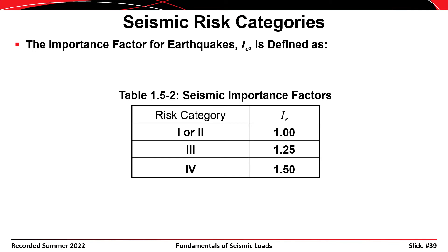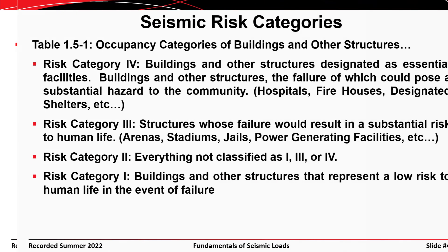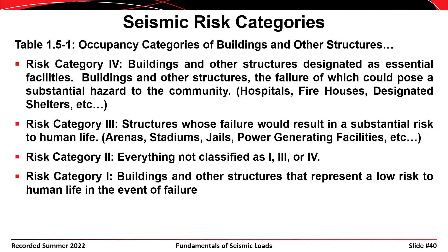The importance factor for earthquakes, I sub E, is something we covered in module one. As a reminder: I sub E is 1.0 for risk category 1 or 2 structures, 1.25 for risk category 3, and 1.50 for risk category 4. Loosely speaking, we design for ground accelerations that are 150% of nominal for risk category 4 structures. The default is risk category 2; risk category 4 are essential facilities; risk category 1 structures are those with relatively low risk to human life in the event of failure.